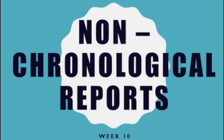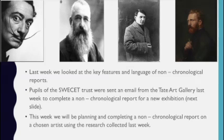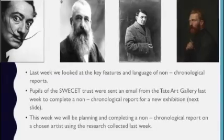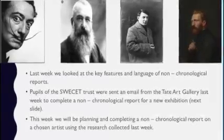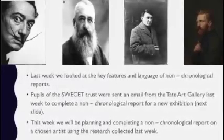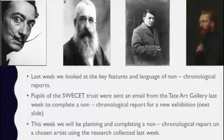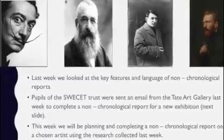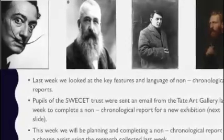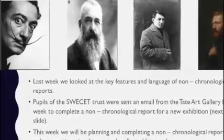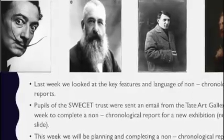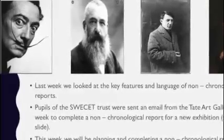Just to recap what your task was for your research: you were supposed to research and prepare a non-chronological report for the Tate Arts Gallery on a chosen famous artist. You needed to choose one artist from the choices given — Salvador Dali, Claude Monet, Pablo Picasso, and Vincent van Gogh. Hopefully you've chosen one and found information using reliable sources, not just the internet but possibly books that you already have.